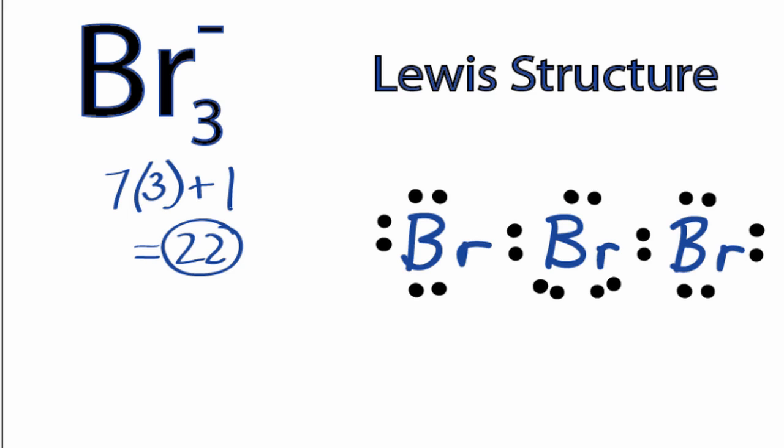So we've now used all 22 valence electrons, we have octets on the outer bromines, the inner bromine has 10 valence electrons, but that's okay, because bromine can have an expanded octet.